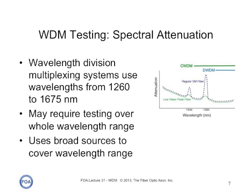When we're testing systems that use wavelength division multiplexing, it's not uncommon on longer lengths of fiber to test spectral attenuation, because we need to ensure that over the entire band that we're doing our wavelength division multiplexing, the fiber can transmit the signals with roughly equal attenuation. Systems tested this way are generally tested with broad wavelength sources to cover the entire wavelength range. We have another video on testing long distance networks that goes into more detail on testing.